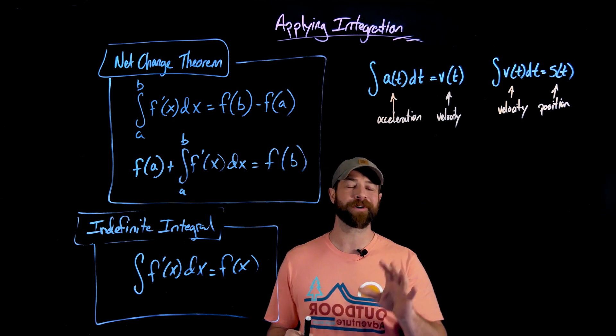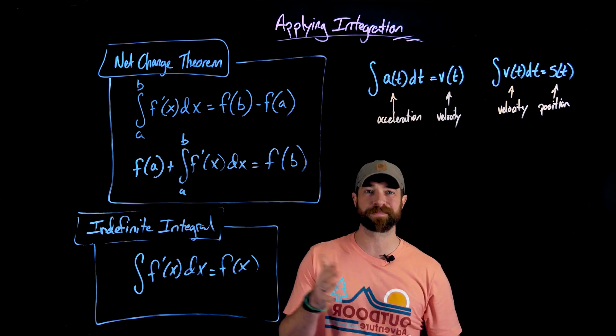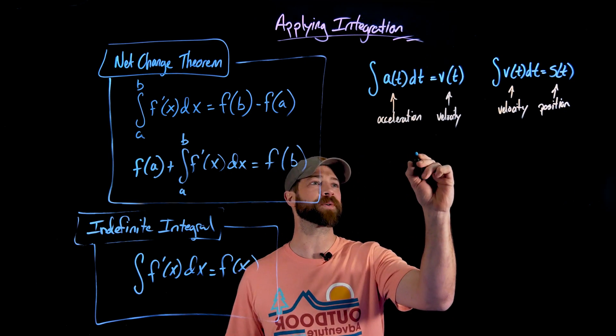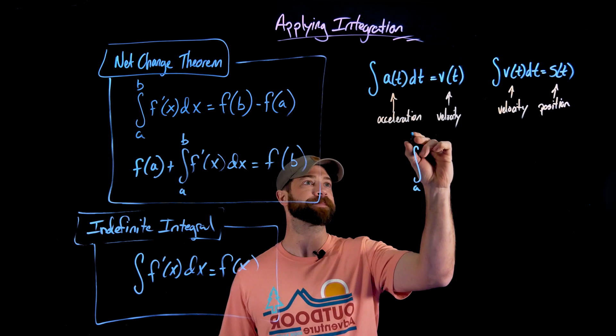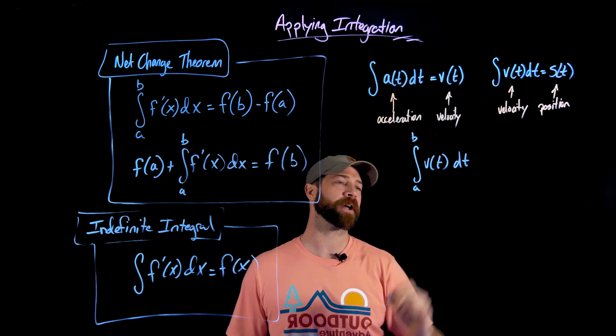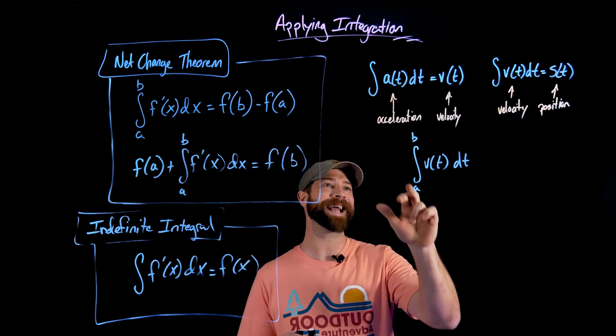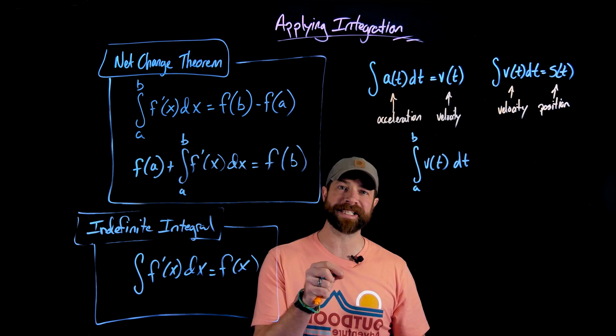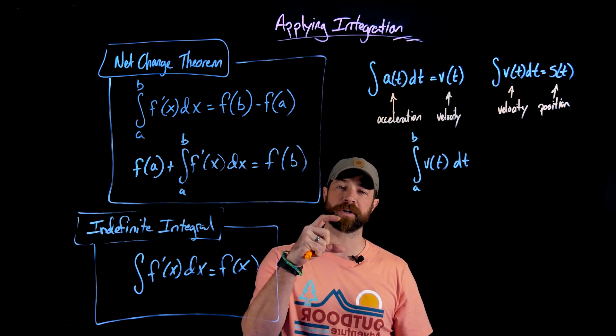Following all of this, the following also is true. And this relates back to that first example I was doing with the motorcycle. If you integrate a velocity function, or any rate of change function, but specifically a velocity function, you integrate from A to B, what you'll calculate is the net displacement of the object on the interval A to B.